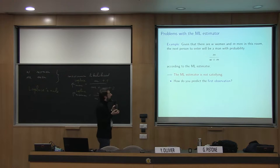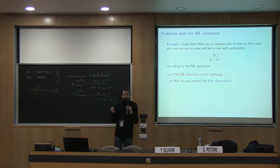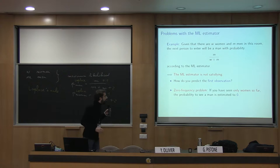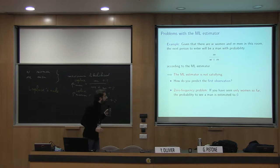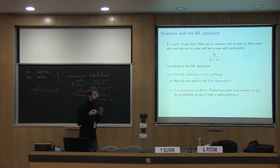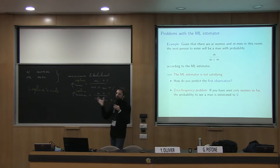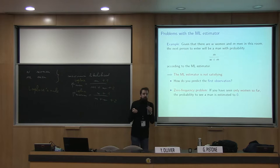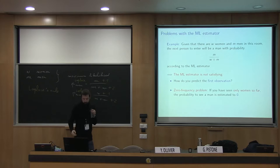A much more serious problem is that possibilities you've never seen so far get probability zero. For Bernoulli distributions over a finite set this isn't a major issue, but when you deal with Markov models for text, and you go for longer memories, you haven't seen all possible combinations of letters or words. If you use that to predict, you'll give probability zero to most sentences with a Markov model. And that's not good at all.